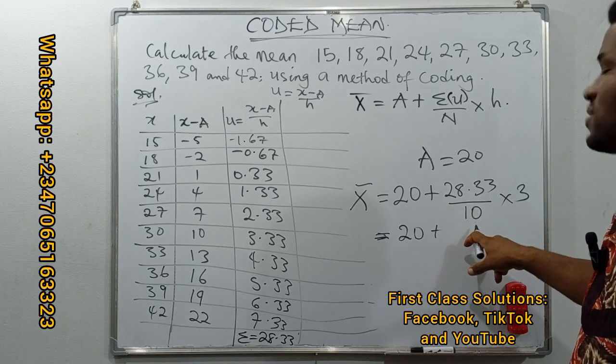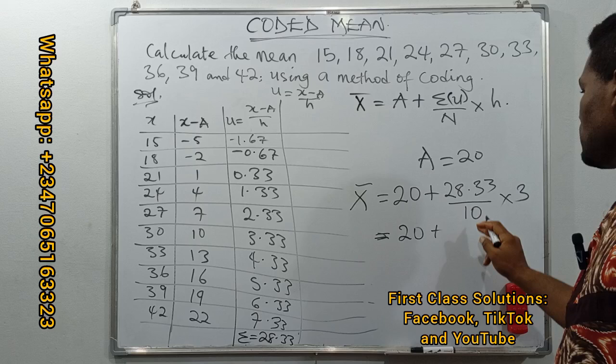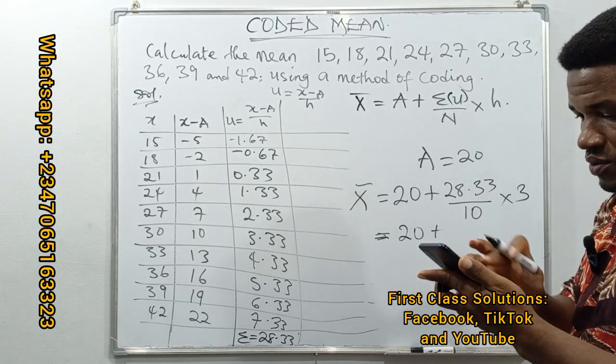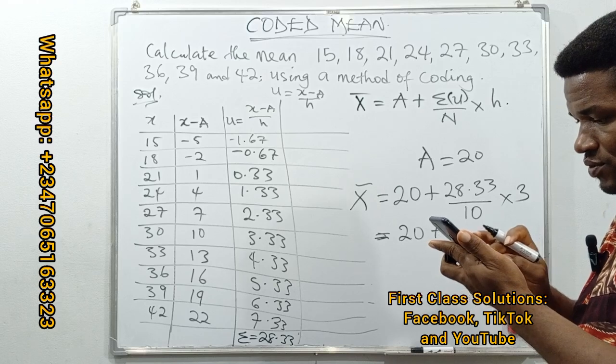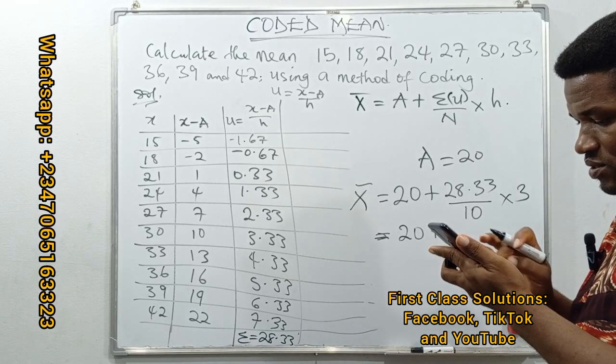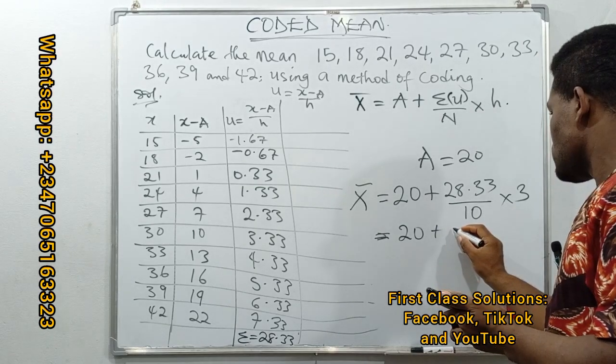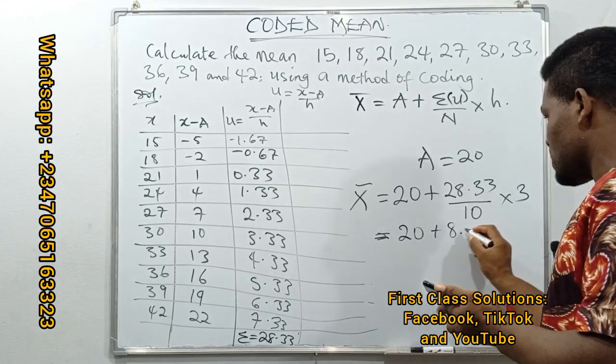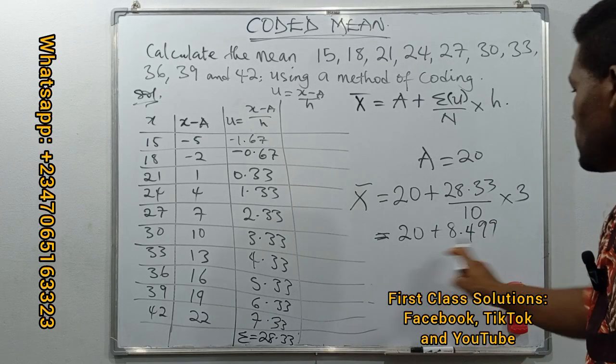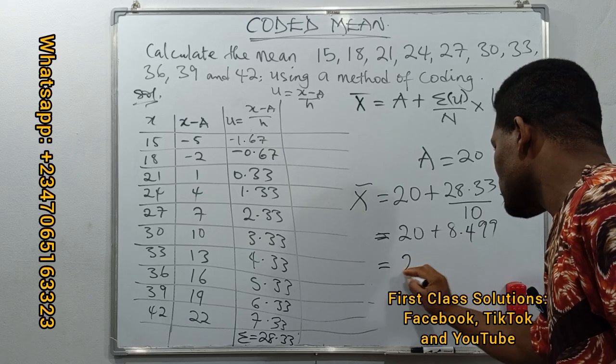Then we have our mean by method of coding to be 20 plus, using BODMAS, you have 28.33 divided by 10, then multiply by 3. Using your calculator should give us something close to 8.499. So 8.499 plus 20, we have 28.499.